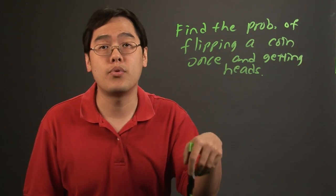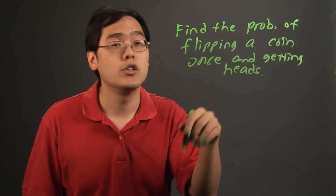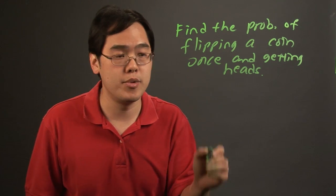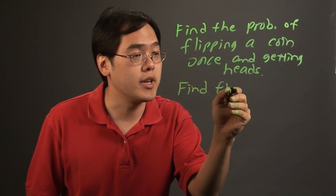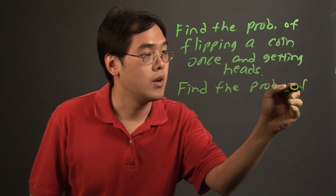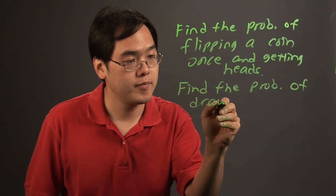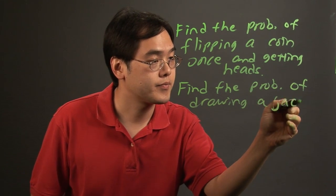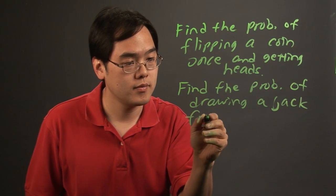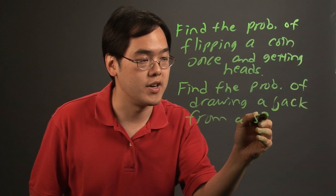Now coins are a pretty common model to use when it comes to finding probability. You can also say find the probability of drawing a jack from a 52 card deck.